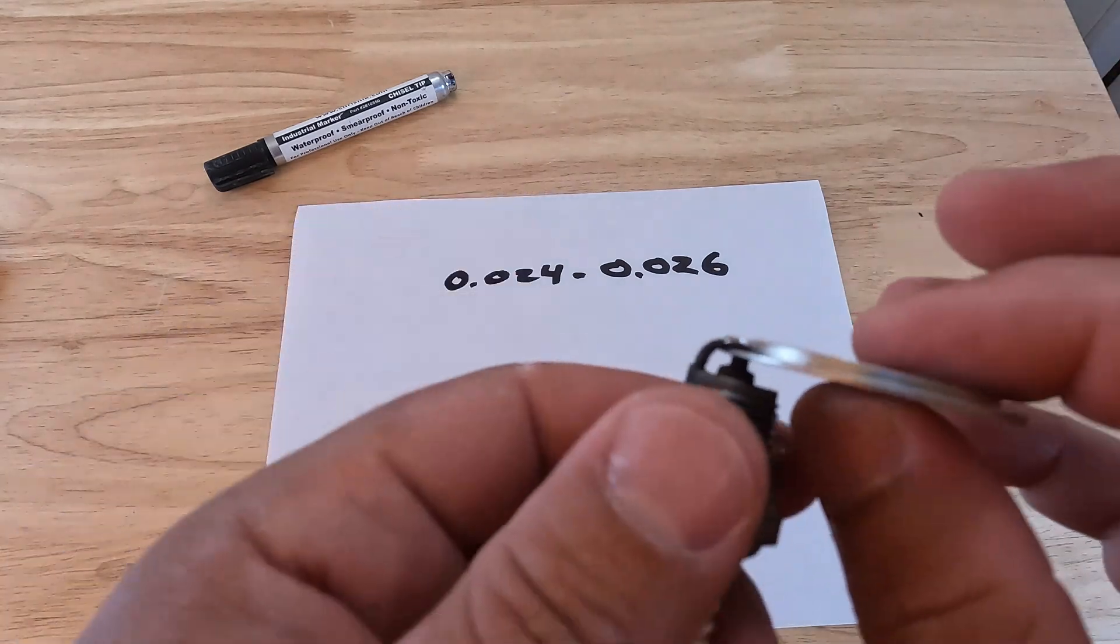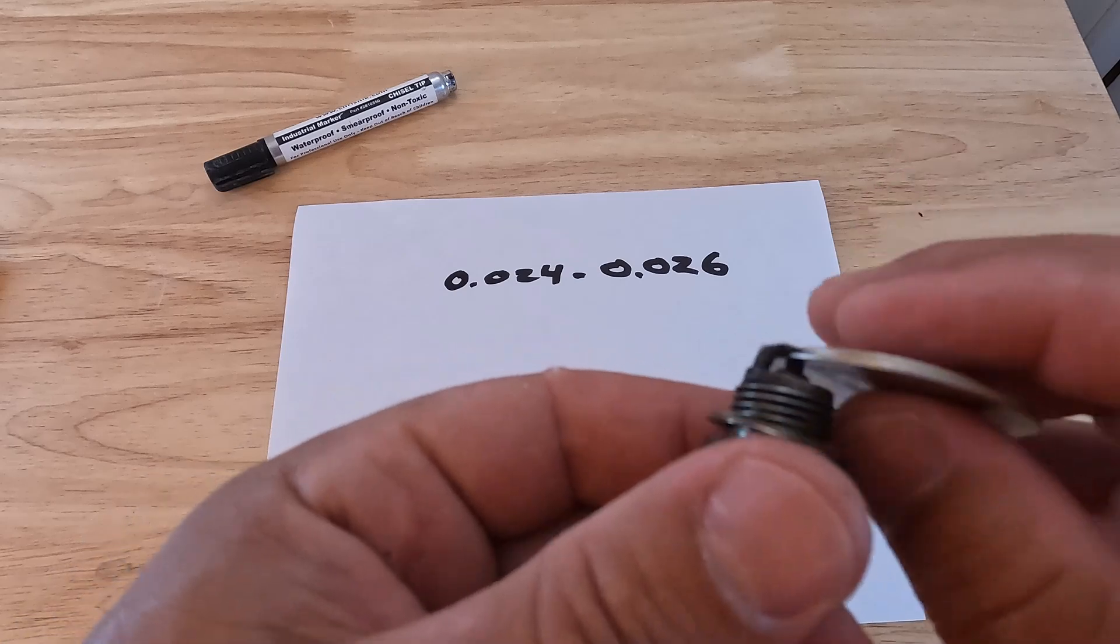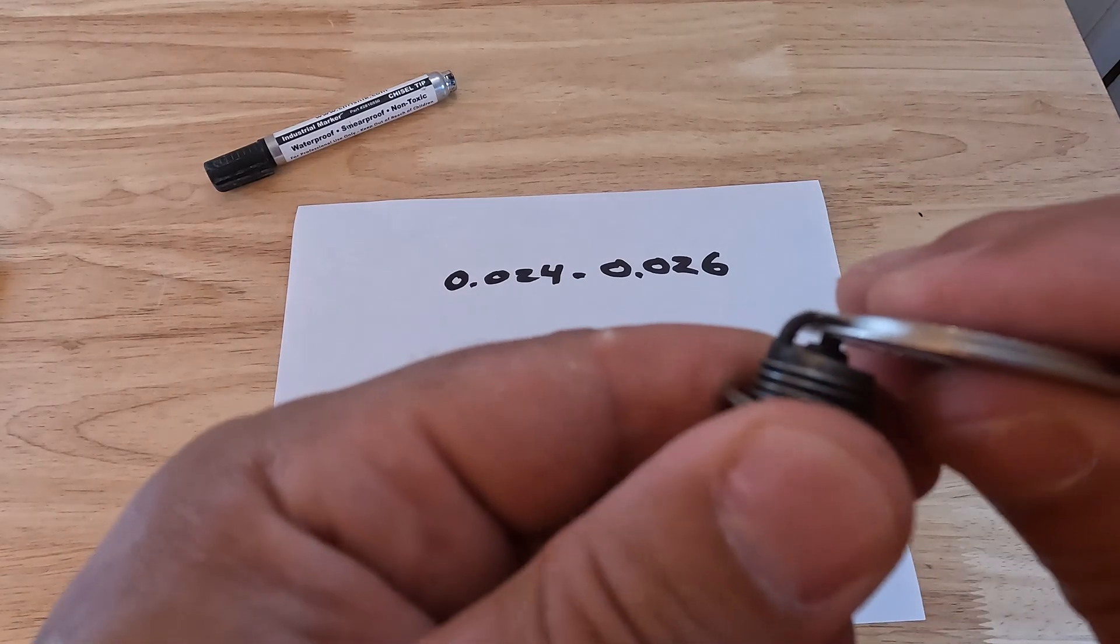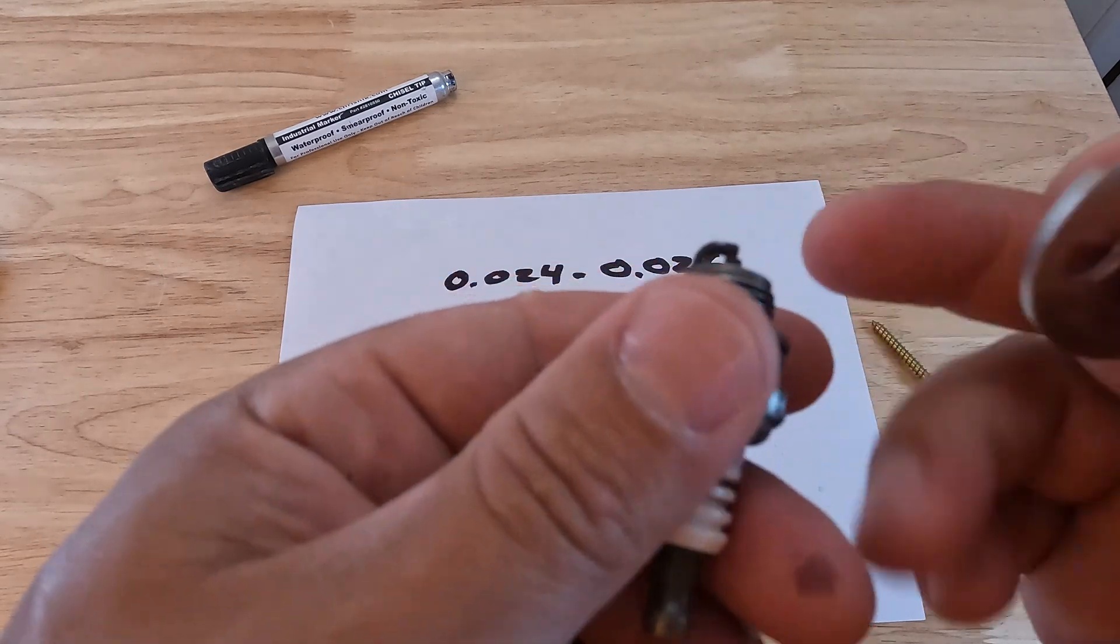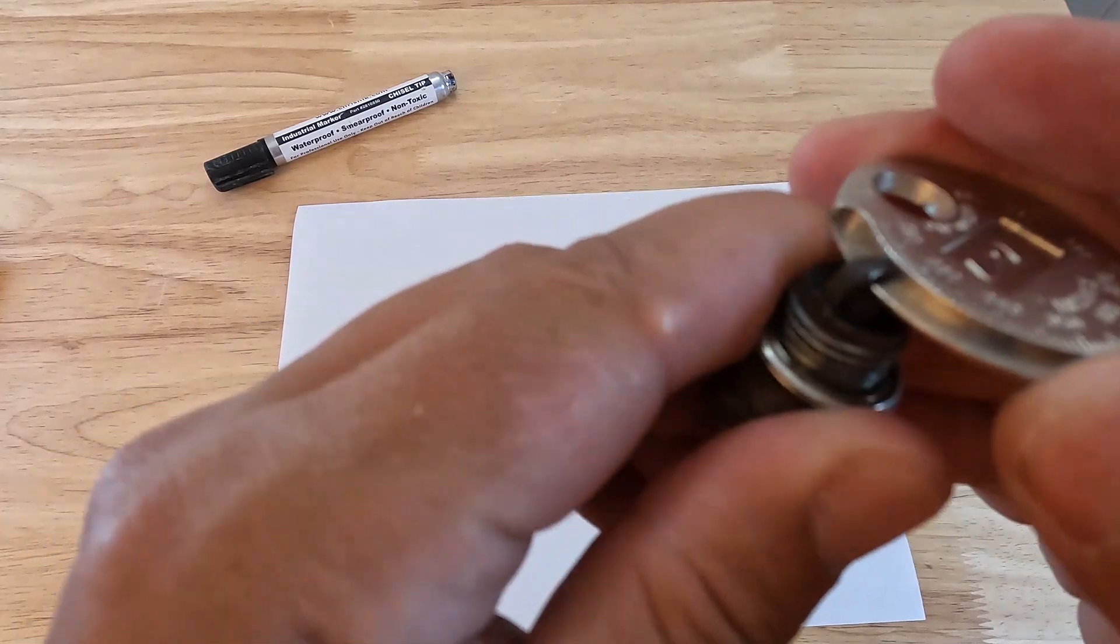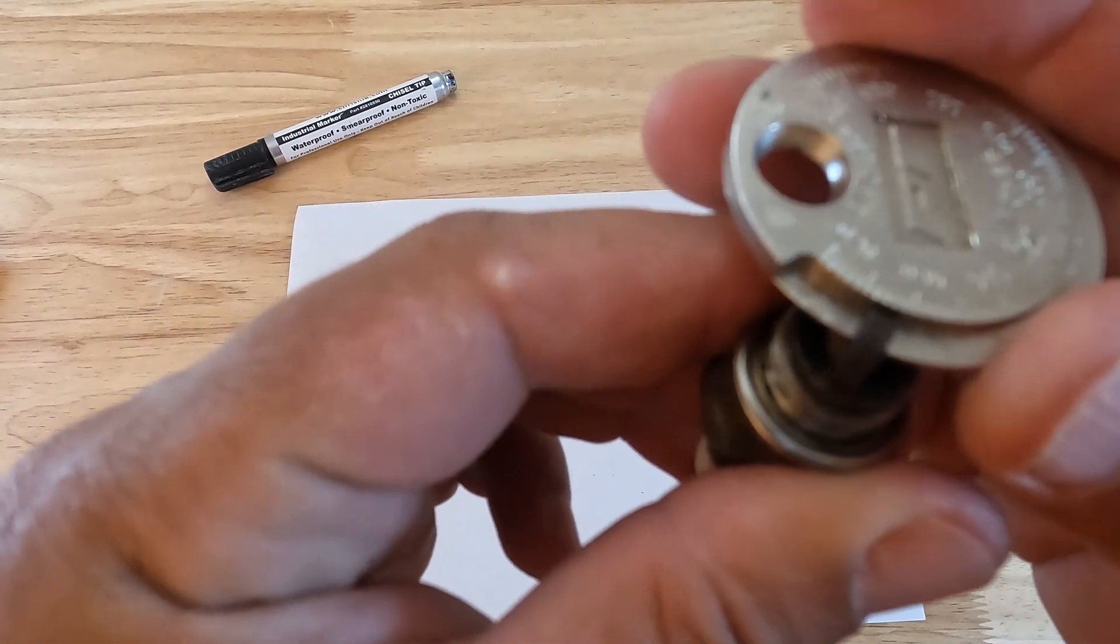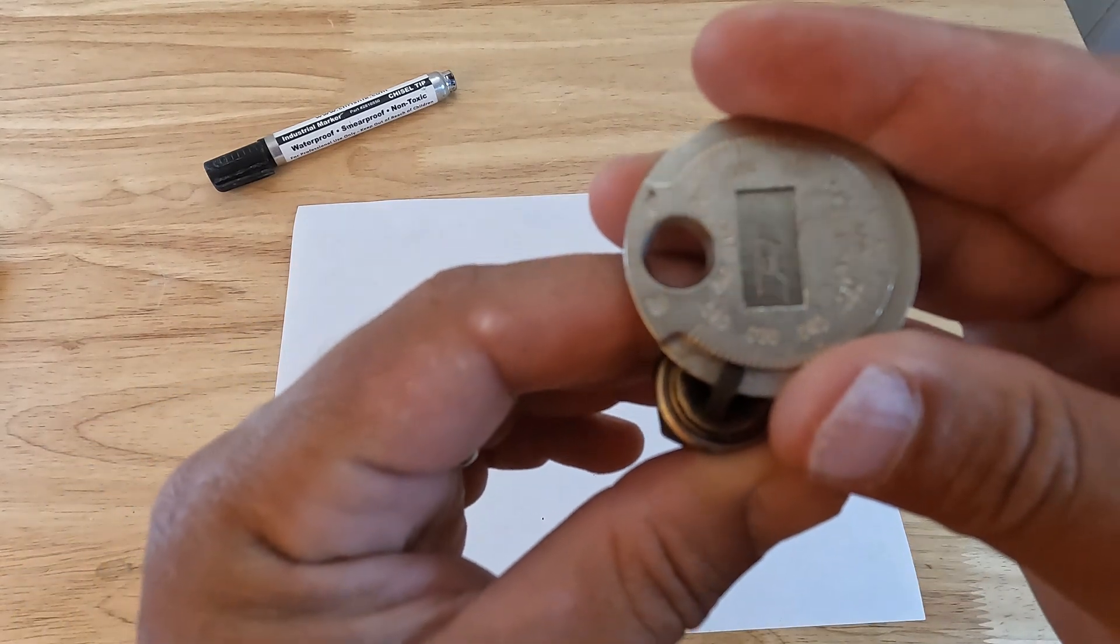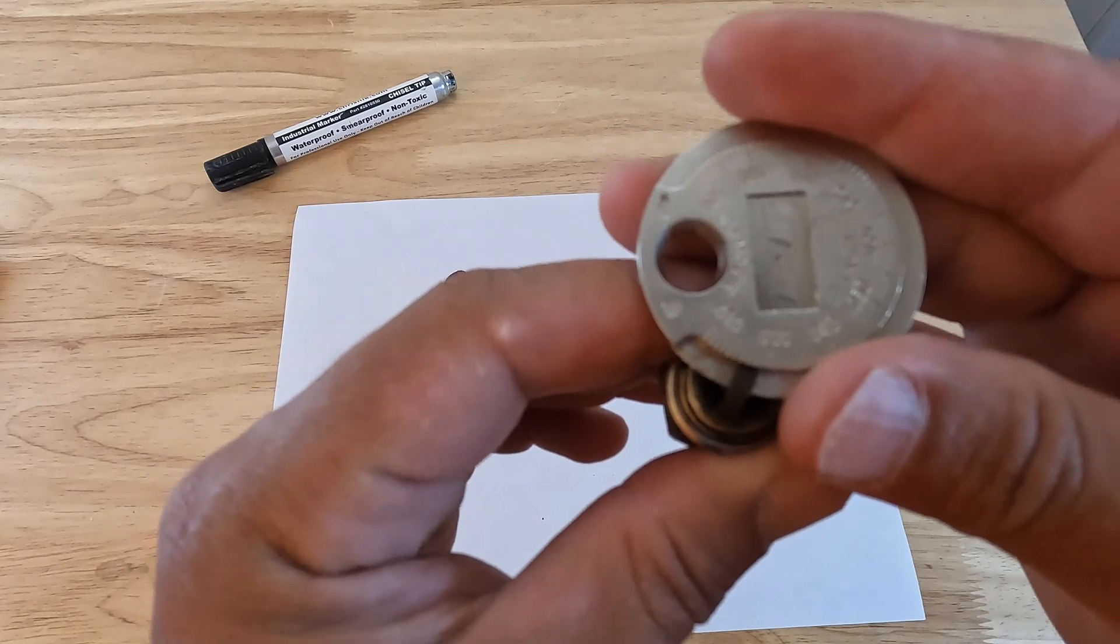If we want to increase that gap, it's very easy to do. You just need to have kind of a gentle touch. You're just going to want to take this tool and just pry up ever so slightly on the electrode and that's going to open the gap. Now you can see we're at about 0.026, we actually opened it up a little bit too high.